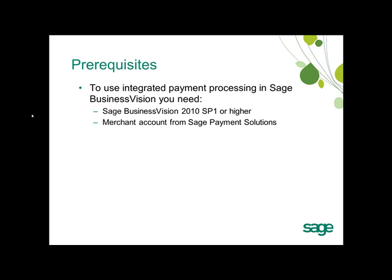There are a couple of prerequisites that you need in order to use Sage Exchange with Sage Business Vision. First, you need Sage Business Vision 2010 SP1 or higher. Also, you need a merchant account from Sage Payment Solutions. Optionally, you need a credit card swipe device to swipe credit cards, or a pin debit swipe device if you're accepting debit cards. If your organization wants solely to accept credit card payments, you can do so without a swipe device by entering the credit card data manually.